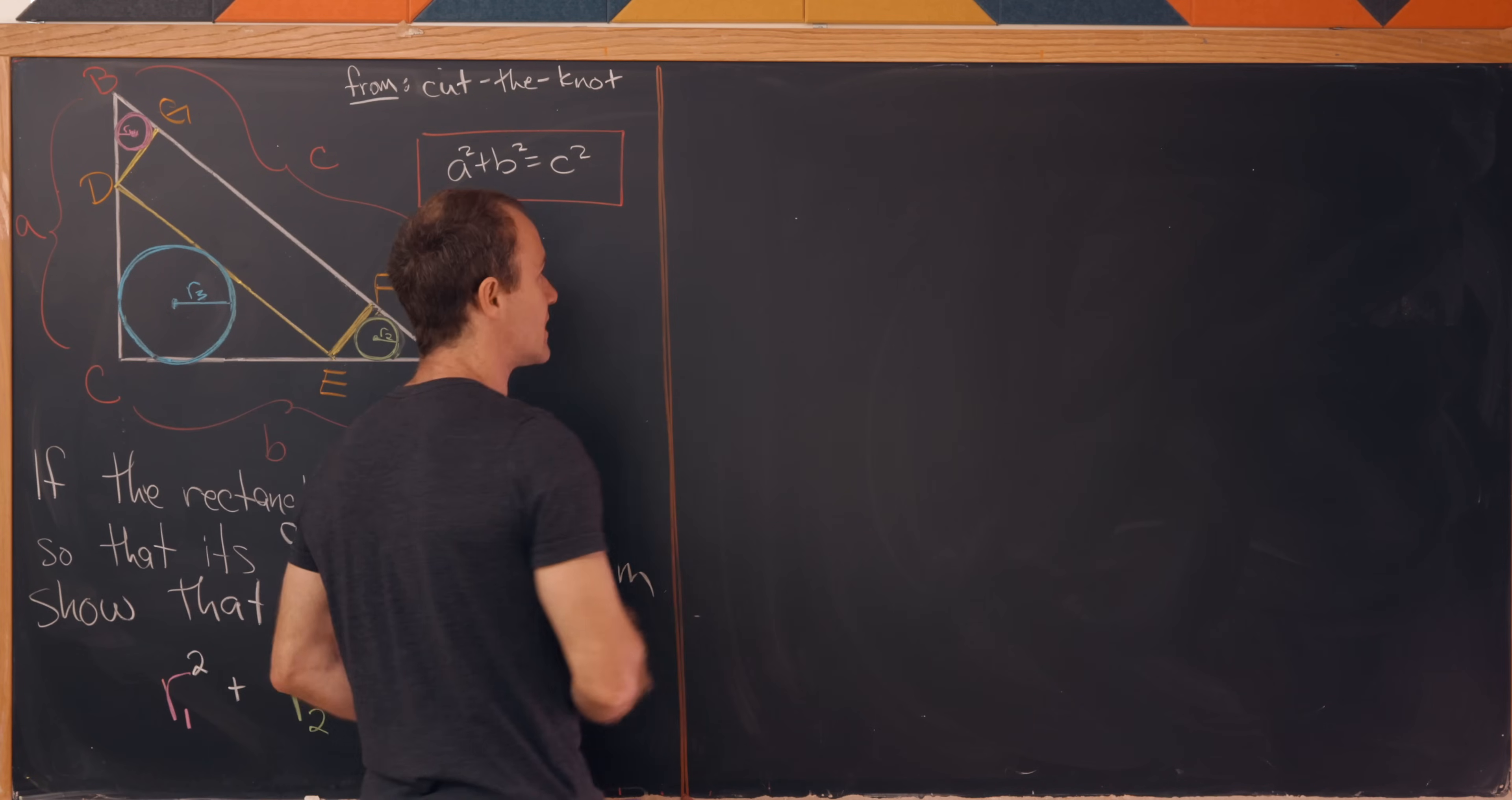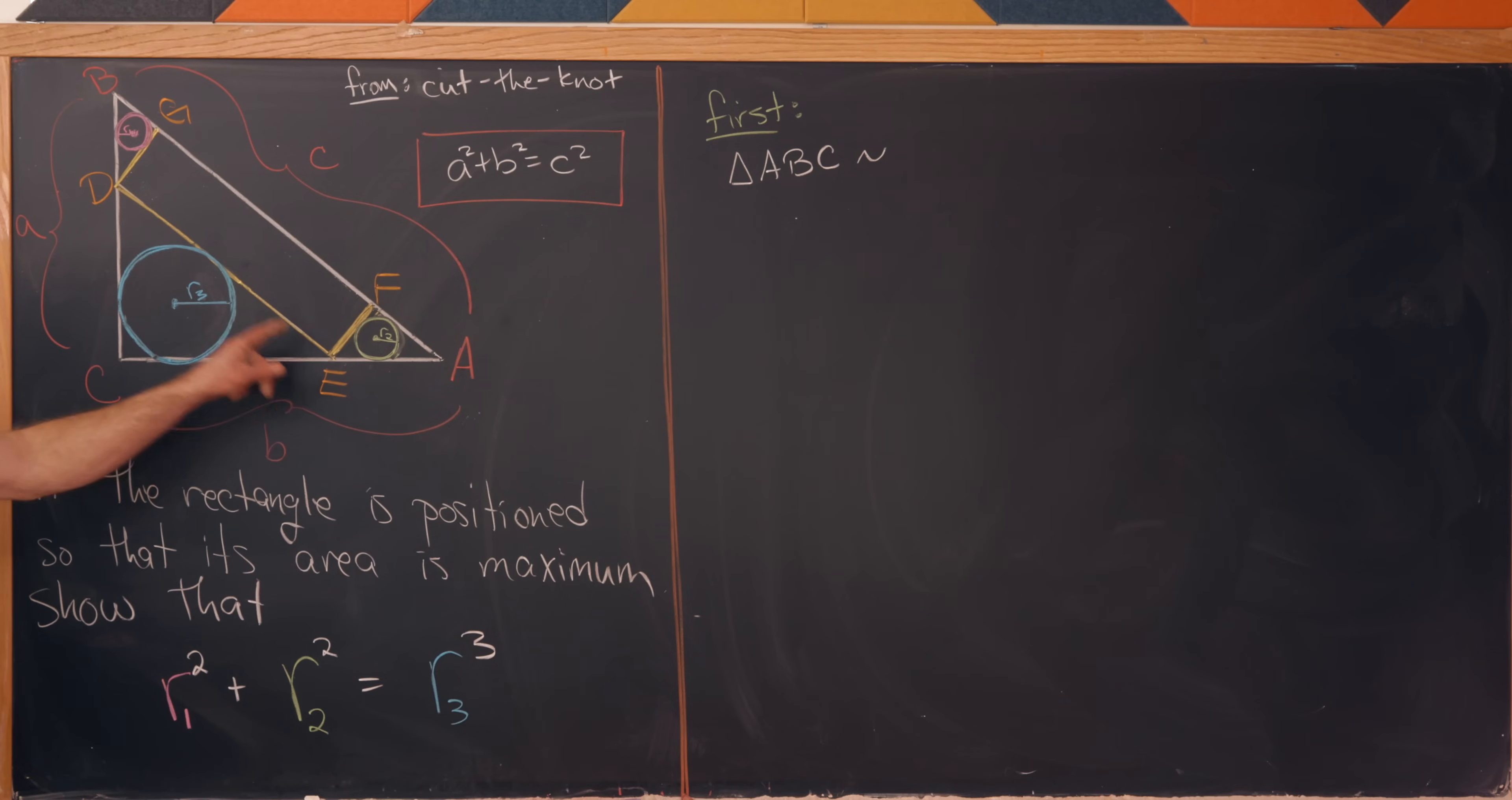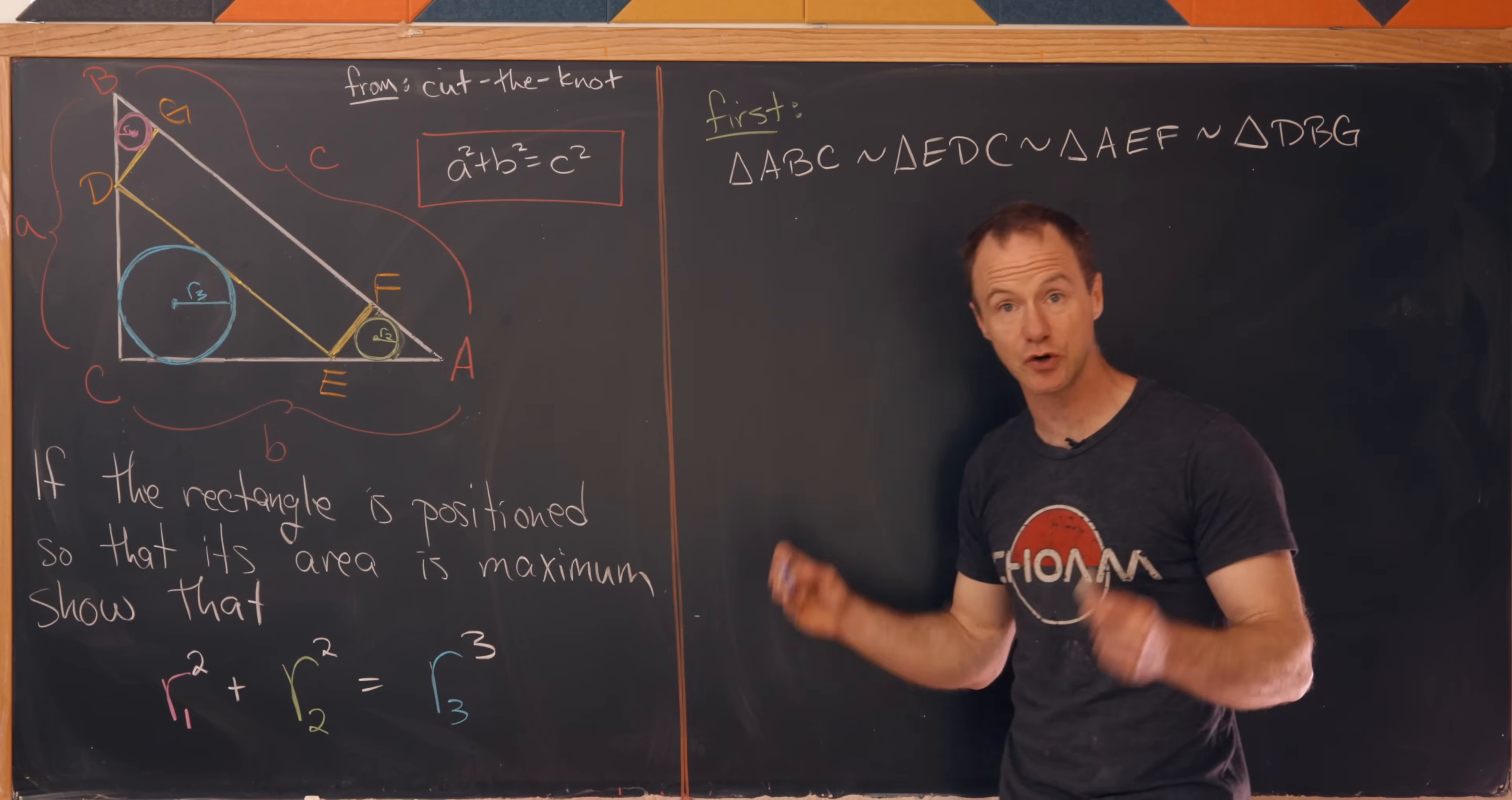Now we want to make a starting observation, and this observation maybe together with our lemma will essentially finish this whole thing off. This observation is on the similarity of several triangles. Notice there are four main triangles in this situation: the largest triangle ABC, then triangle EDC, and those are similar. We've also got triangle AEF, similar to each of those as well, and finally triangle BDG, similar to all of these. In other words, all of the triangles in our situation are similar.